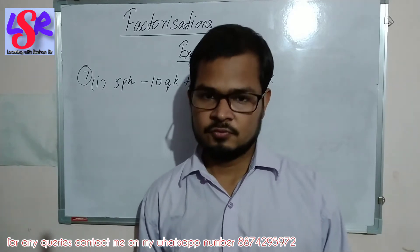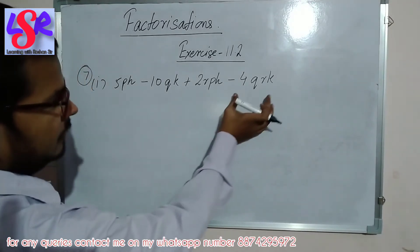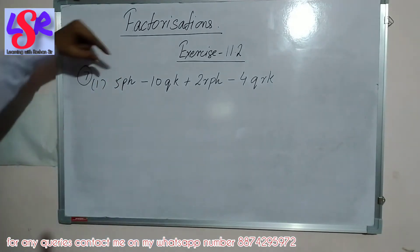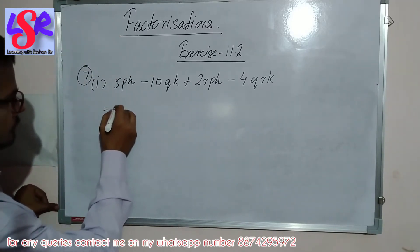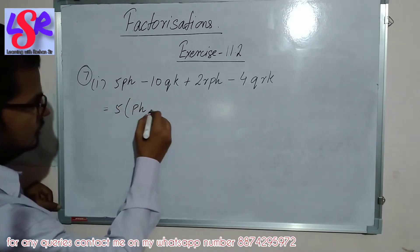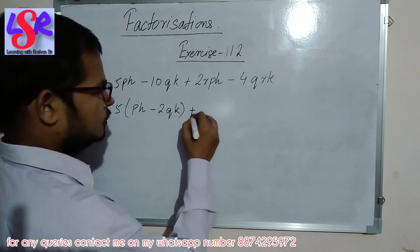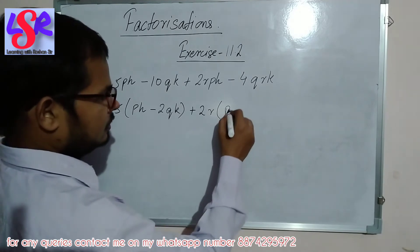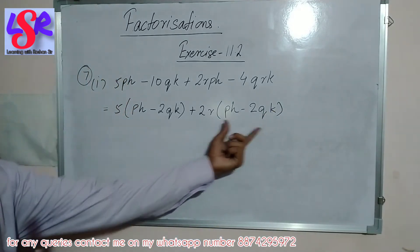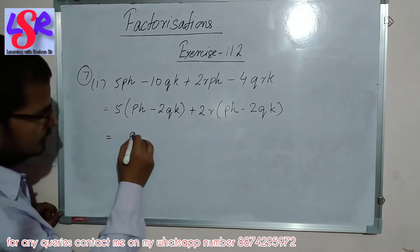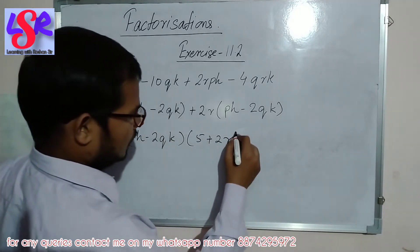Question number 7, first part — here we are having 5ph minus 10qk plus 2rph minus 4qrk. From the first two we take 5 as common, leaving ph minus 2qk. From the last two we take 2r as common, leaving ph minus 2qk. The bracket is common, so the answer is (ph minus 2qk)(5 plus 2r).